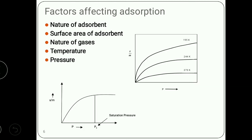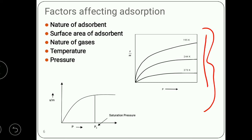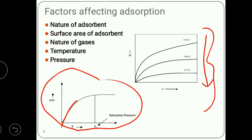Now factors affecting adsorption. First, nature of adsorbent — if the adsorbent is highly porous, then rate of adsorption increases. Surface area of the adsorbent — if there is an increase in the surface area of the adsorbent, it results in an increase in the process of adsorption. Nature of the gas — easily liquefiable gases such as hydrogen iodide, ammonia, and chlorine are adsorbed more easily than permanent gases such as H₂ and N₂, because in easily liquefiable gases there are stronger intermolecular forces. Temperature — adsorption is inversely proportional to temperature; adsorption decreases with increasing temperature. And lastly, pressure — adsorption first increases initially with increasing pressure, and at high pressure adsorption is independent of pressure.